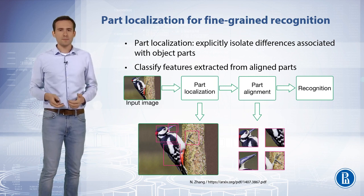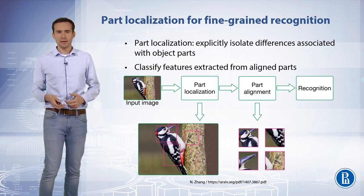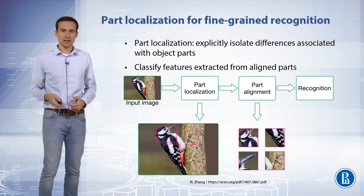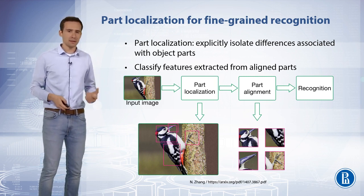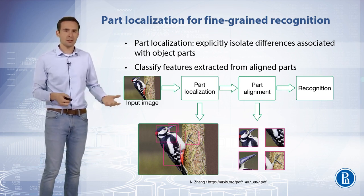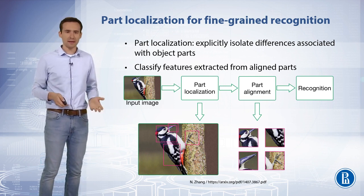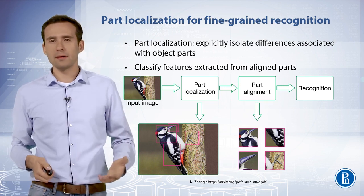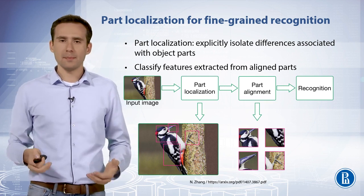During the next week, you will learn how to create object detection algorithms that can be used for part localization using deep convolutional neural networks. To make the network more sensitive for the target task of fine-grained bird classification, one may take an ImageNet pre-trained convolutional neural network such as the Inception model and fine-tune it for the 200-way bird classification task using bounding box annotations provided in the dataset. The parts of the fine-grained object are then localized, such as the head and torso for bird species classification, and then part alignment is done.